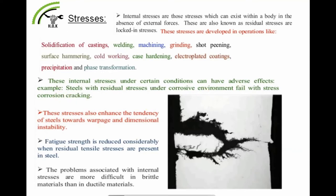Due to internal stresses, crack problems can be generated during machining or forging operations. Fatigue strength is reduced considerably when residual tensile stresses are present in steel. The problems associated with internal stresses are more difficult in brittle materials than in ductile materials, leading to quality problems and brittleness of metal steels. After annealing, ductility is created in the metal steels that counters these quality problems. The structure of a part can be disturbed due to forging, leading to cracking on the surface.